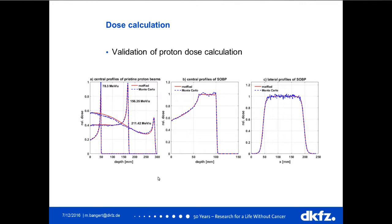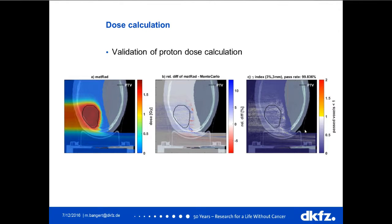For particle dose calculations we use a conventional pencil beam algorithm factorizing into lateral and depth-dependent components. The lateral component can be either a single Gaussian or a double Gaussian to describe the lateral dose fall-off. We validated this algorithm against Monte Carlo simulations of the HIT beamline, showing results for pristine pencil beams, SOBP depth dose profiles, and lateral profiles through the SOBP. We're quite happy with the agreement, which is reflected in high passing rates for gamma index comparison for patient cases.